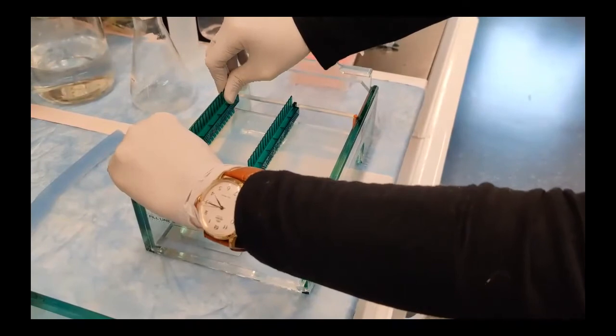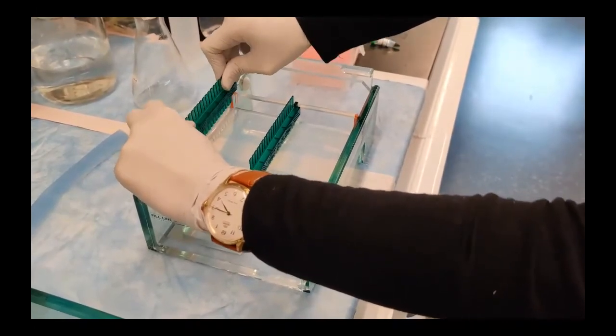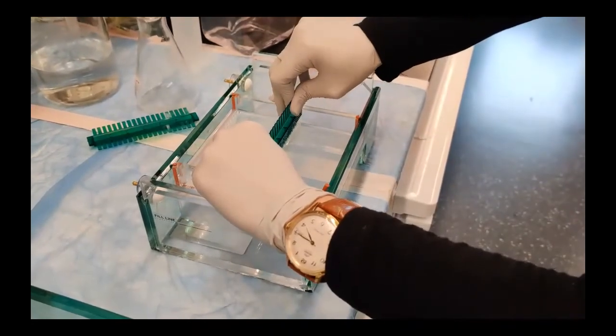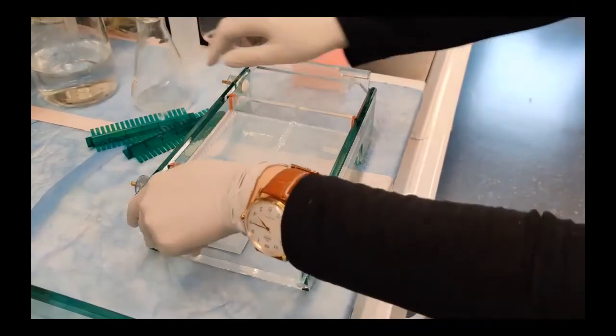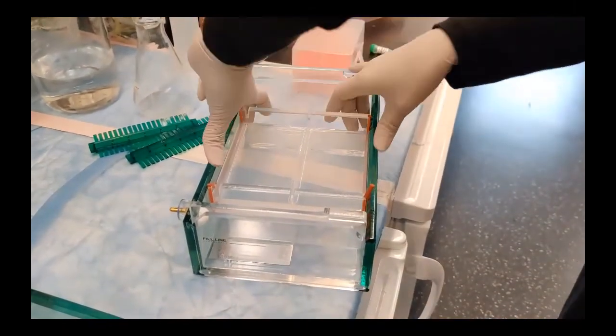After 15 to 20 minutes, the gel is now hardened and we can set it up for gel electrophoresis. First, we take out the combs that made the wells for us to add the samples.